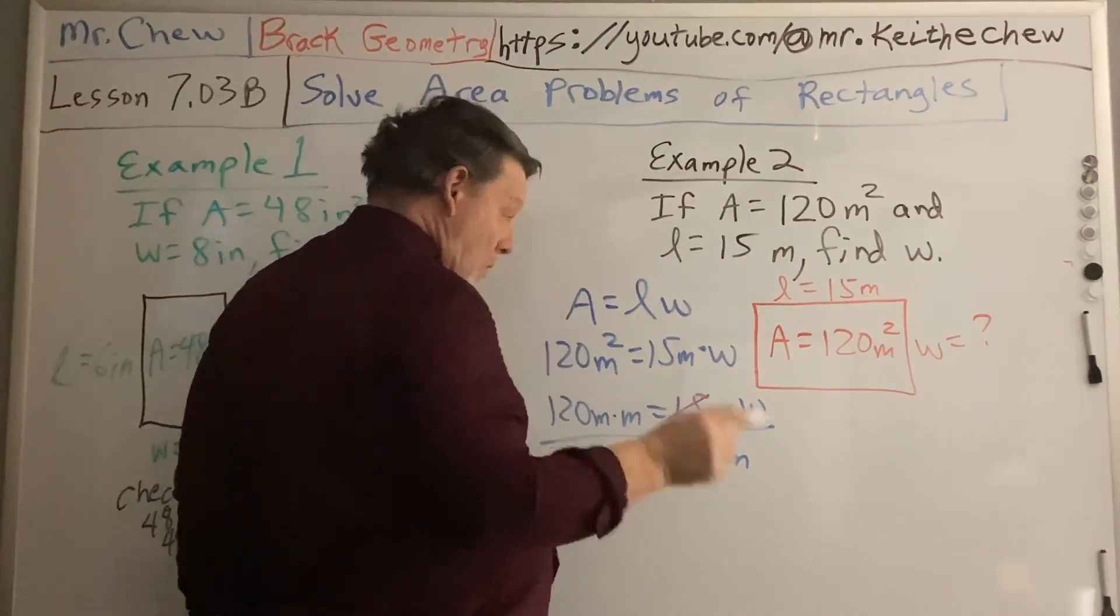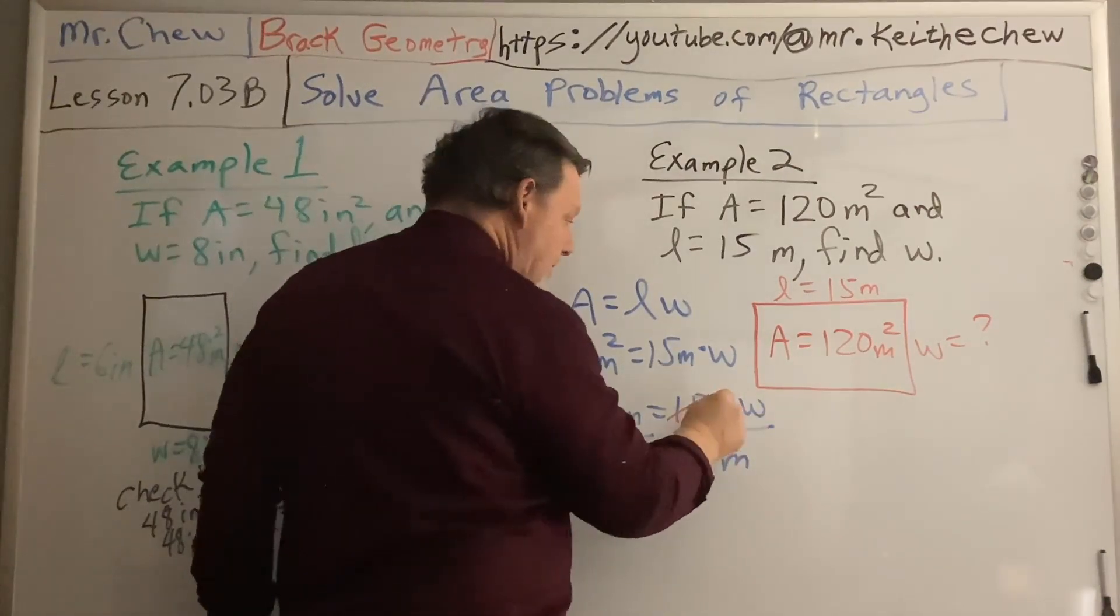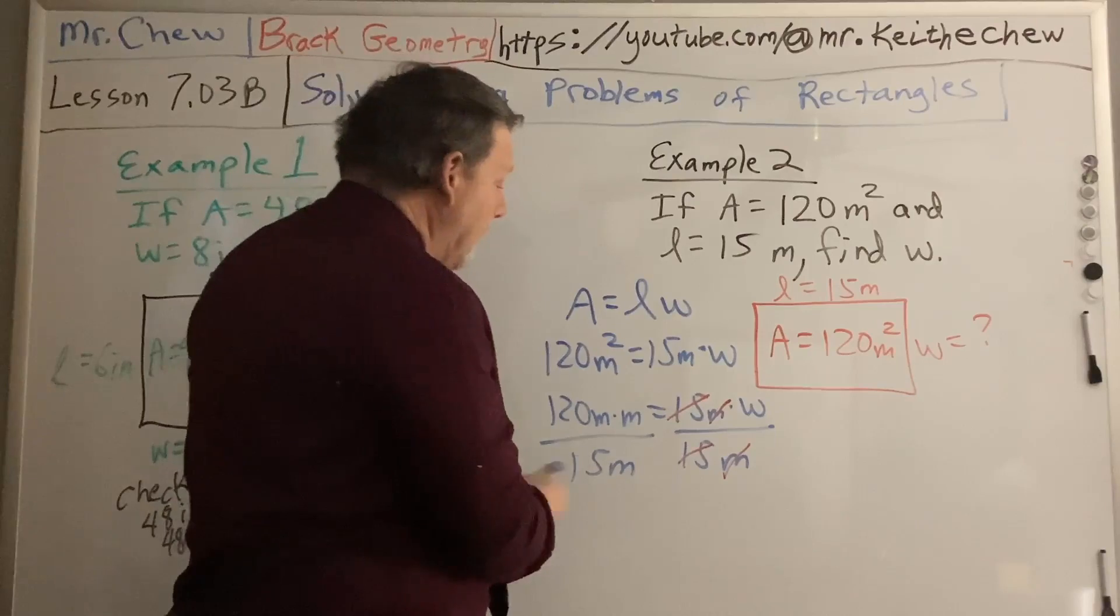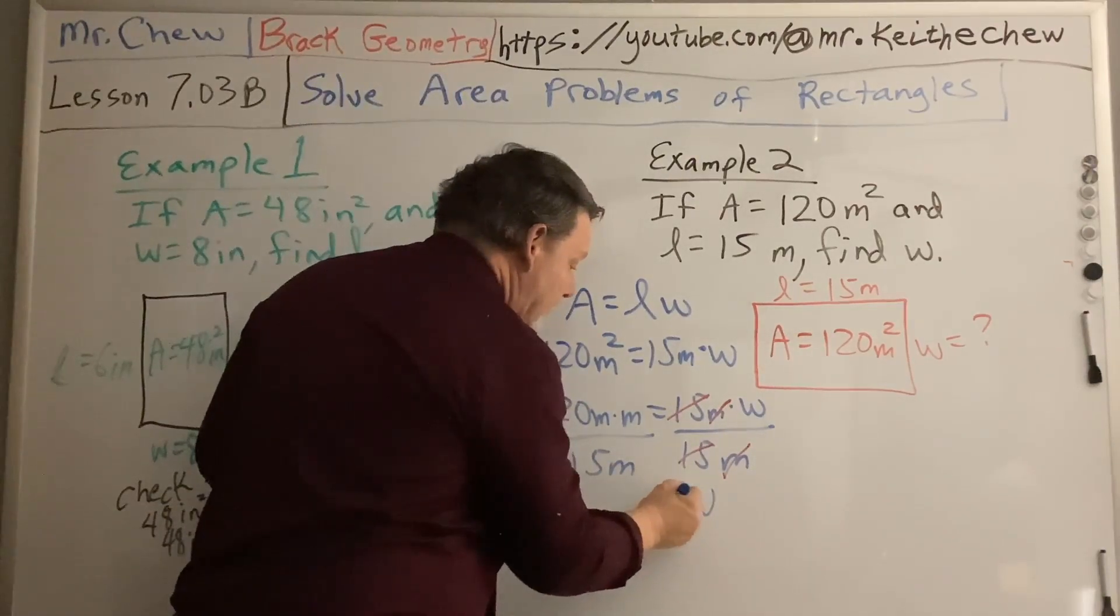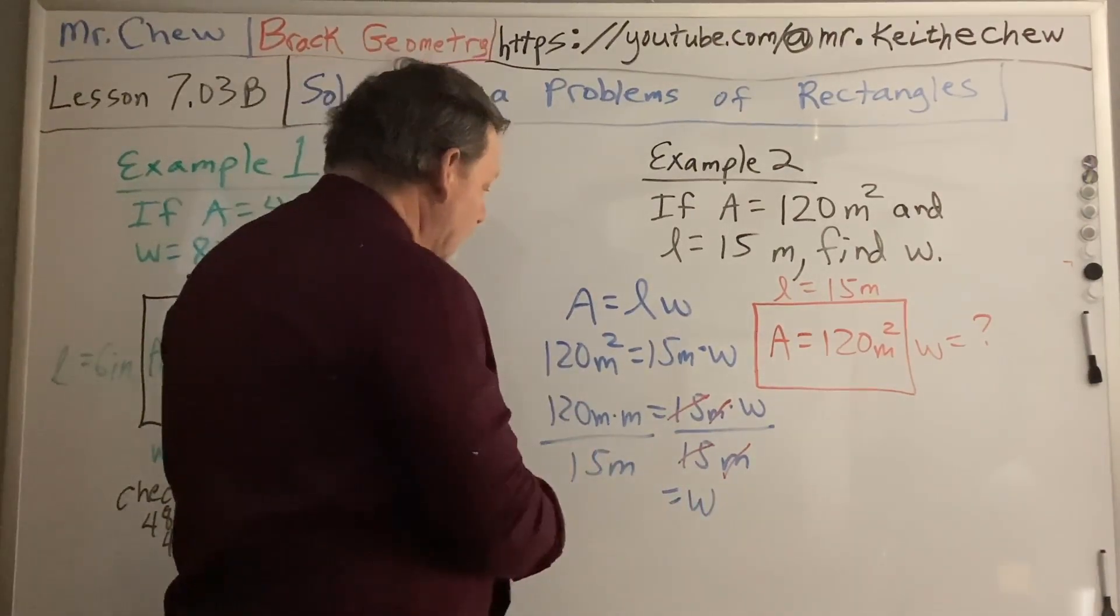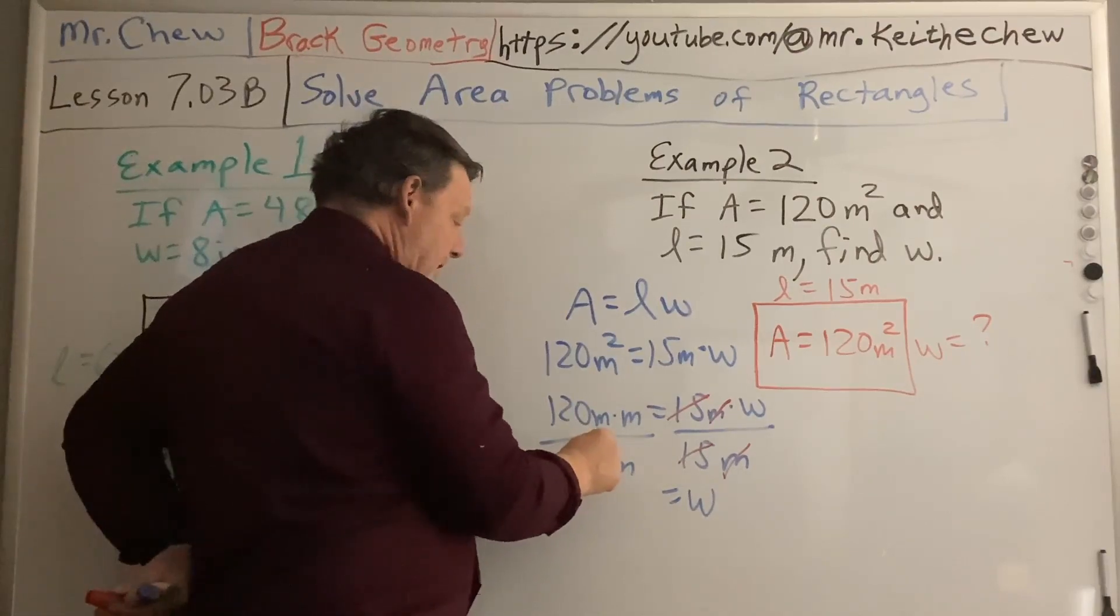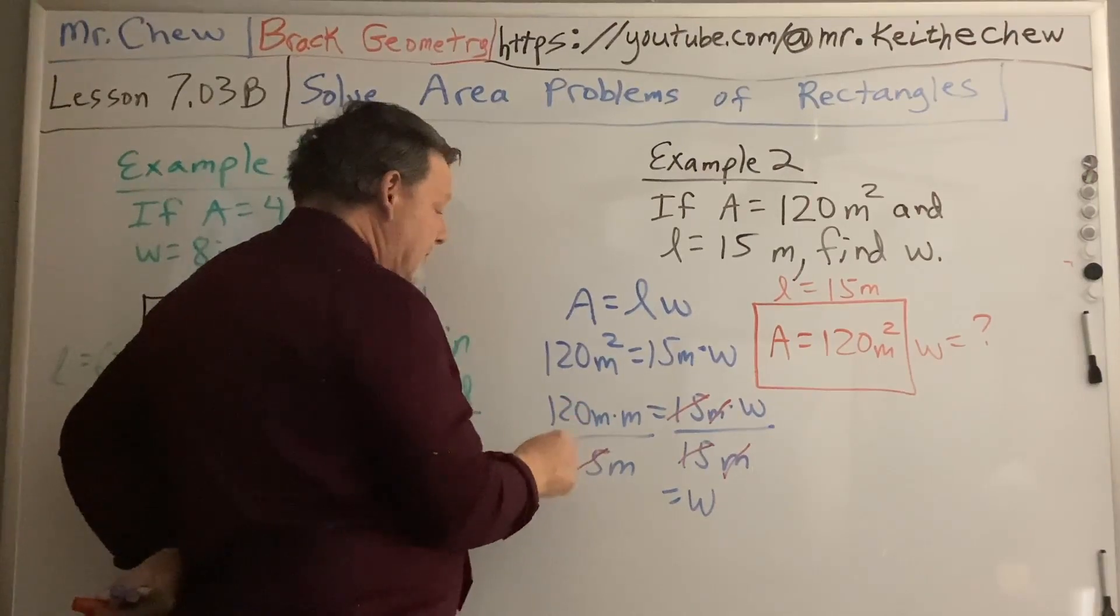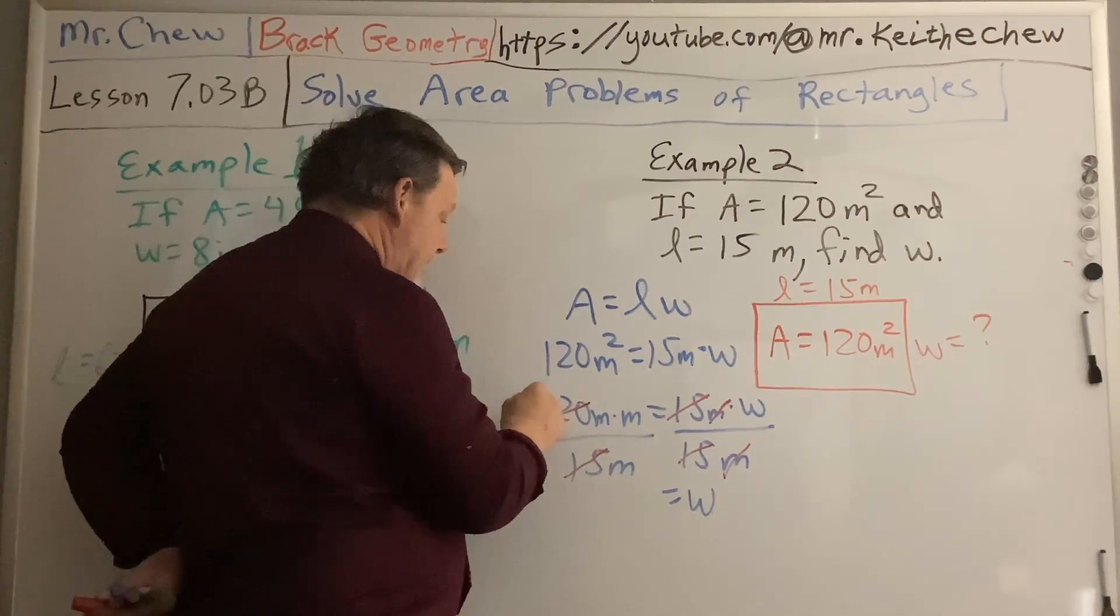15 over 15 is 1. 1 over 1 is 1. Meters over meters is 1. And I've got my W left there. So I have W equals. My 15 goes into 15 one time, and 15 divides into 120 eight times.